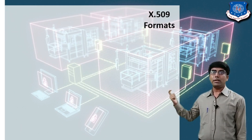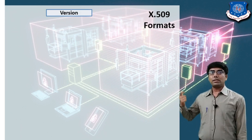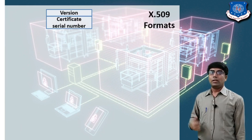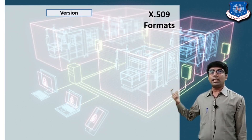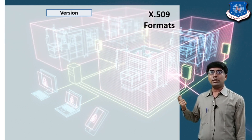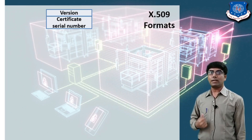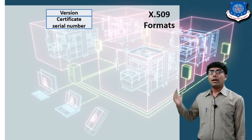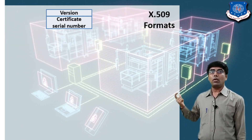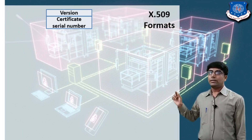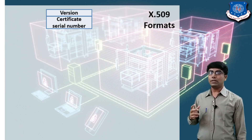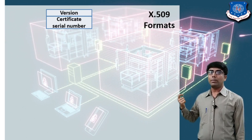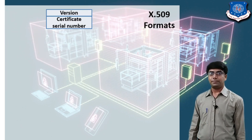Let's look at the format of X.509. The first field is the version. Every certificate has a version number indicating which version is being used. There are three versions: version 1, version 2, and version 3. The difference between them is in the number of fields — version 1 uses some fields, version 2 adds extra fields, and version 3 uses all the fields from versions 1 and 2.